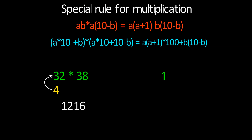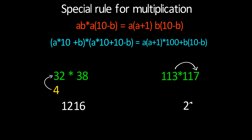Let's take another example: 113 times 117. The first two digits are the same, and 10 minus 3 is 7. We multiply 7 and 3 to get 21. Now increase 11 by 1 to get 12, and 12 times 11 is 132. So we get 13221 as our answer.